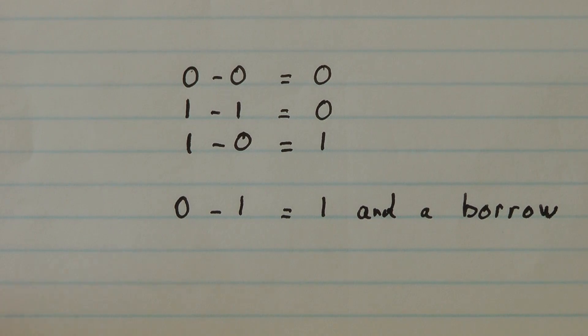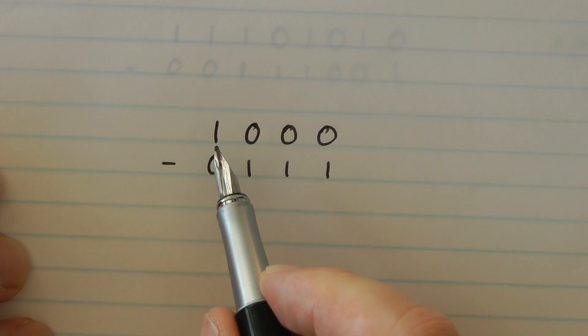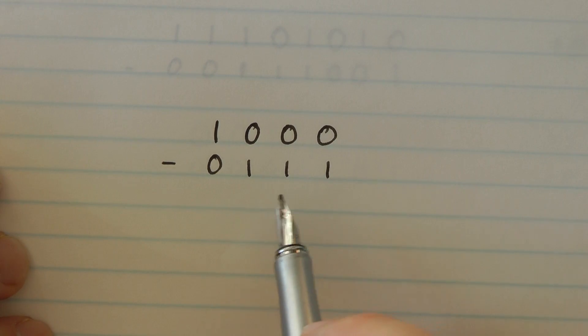So let's try the first very simple example. We've got two binary numbers up here. You've recognized that the top one is 8 and we're going to take away 7 from 8.